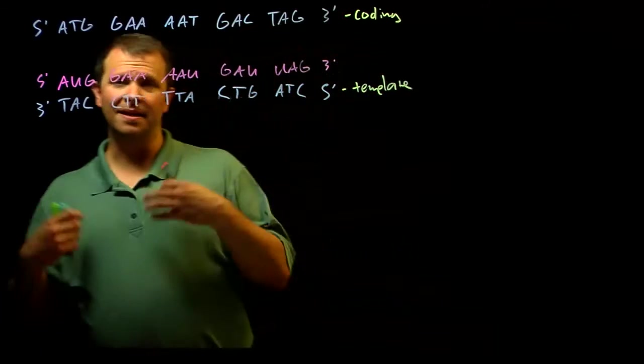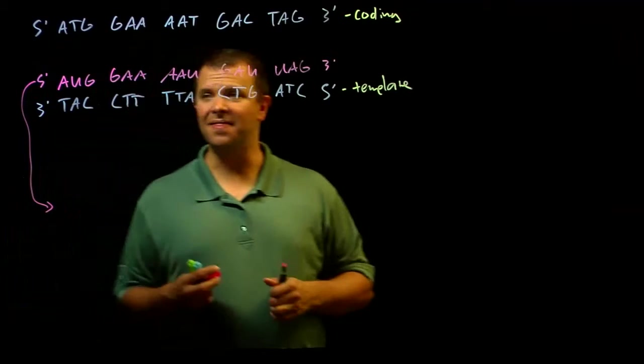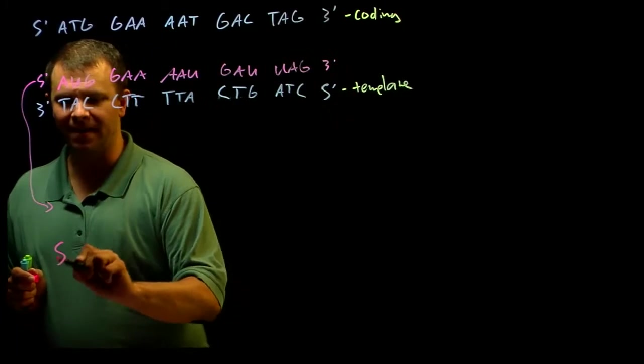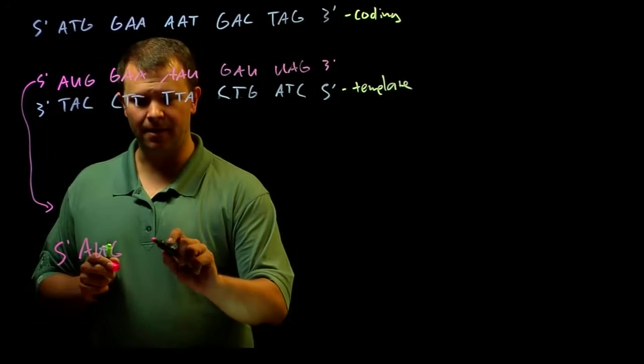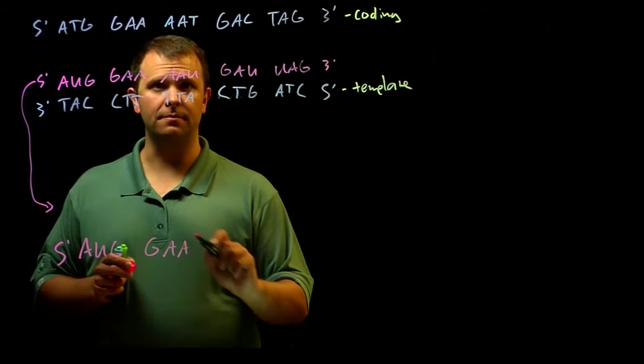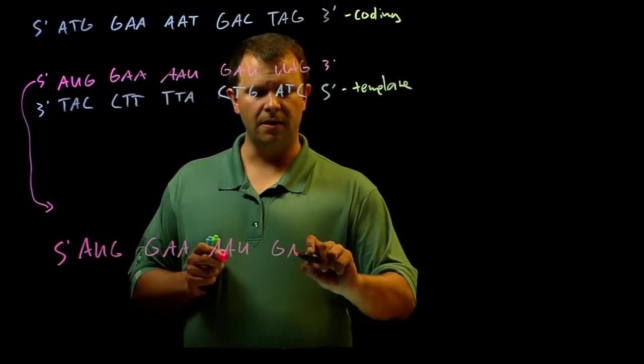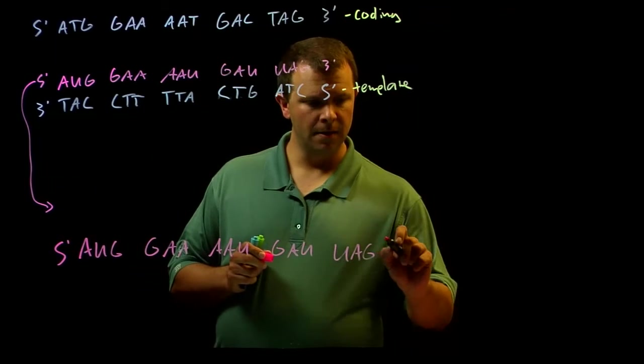And so now, at least in a eukaryotic organism that has a nucleus, that RNA moves out of the nucleus. It gets transported out of the nucleus. And so I'll go ahead and reproduce it one more time out here. GAU, UAG, 3 prime.